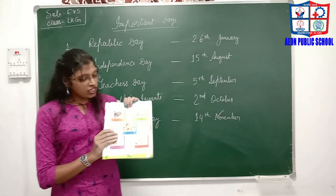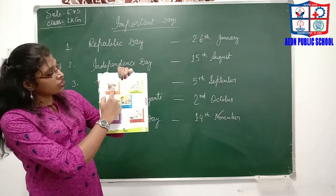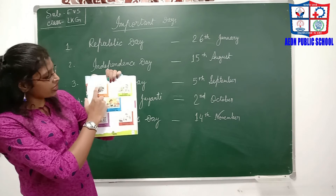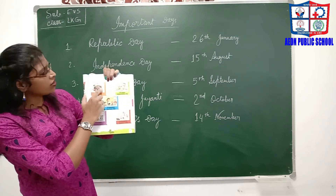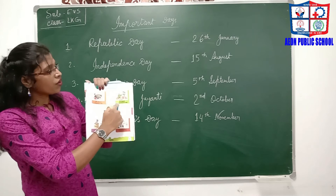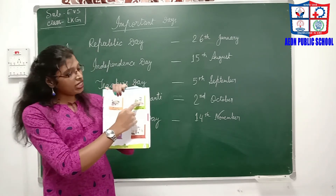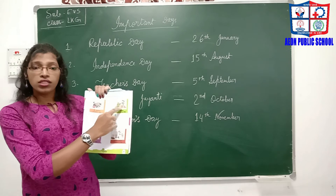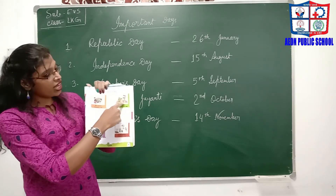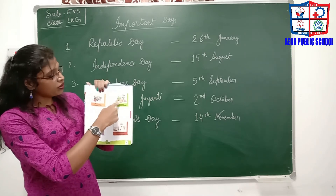Now look at your book. Here are some pictures. For 26th January, Republic Day, you can see flag hoisting — some people are watching from a distance. On 15th August, Independence Day, we celebrate this day. Flags are hoisted here and there, and students are also present.